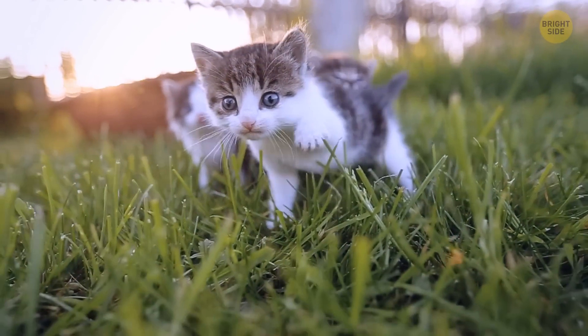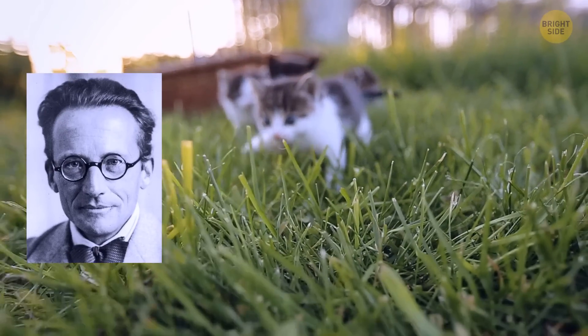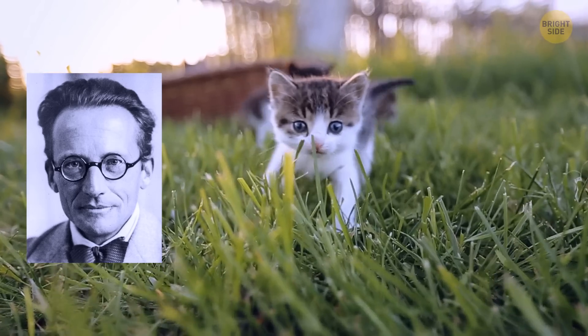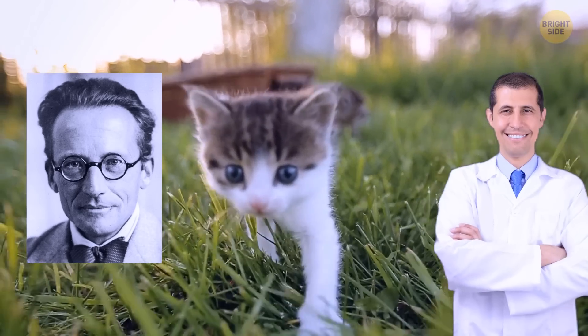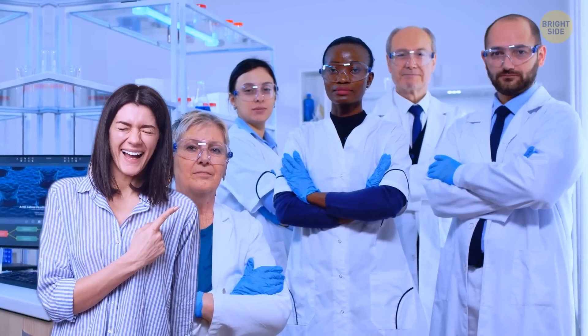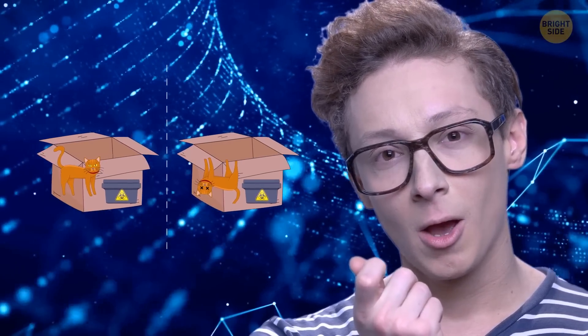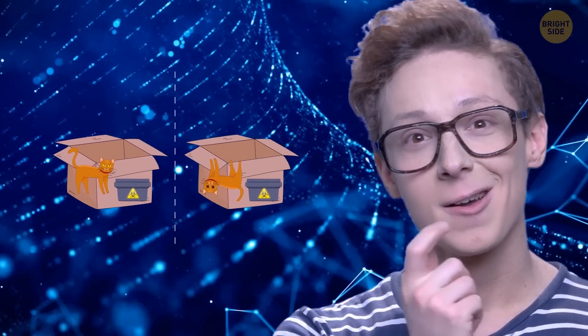So why do we do all this to a poor kitty? Well, initially Erwin Schrödinger wanted to show how stupid it all sounded. But then he accidentally proved that quantum physicists were right. The situation turned out to be pretty funny. It went like this: Ha ha ha, these quantum physicists have no idea what they're talking about. According to their logic, the cat in my box should be both alive and not alive at the same time. Wait, hold on. Uh-oh. They're right.